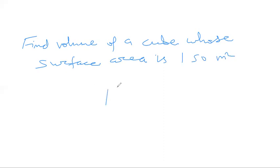First of all let us draw a cube structure. A cube has all sides equal. If this is a. Now we have been given surface area. So what is the formula of surface area? There are six surfaces in a cube.